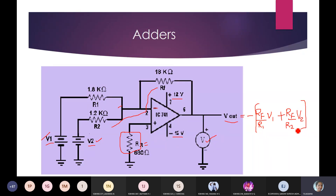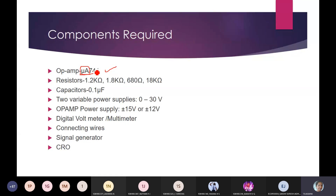Theoretically, if R1 = R2 = RF, the output simplifies to −(V1 + V2). In this experiment, R1 = 1.8 kΩ, R2 = 1.2 kΩ, and RF = 18 kΩ. You require four resistors: 1.2 kΩ, 1.8 kΩ, and 18 kΩ. Capacitors are not needed for the adder — they are for the differentiator and integrator.